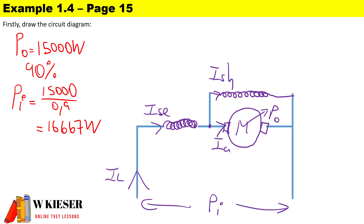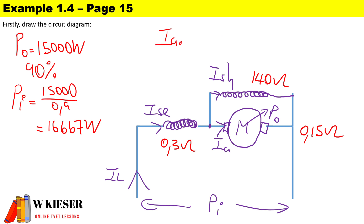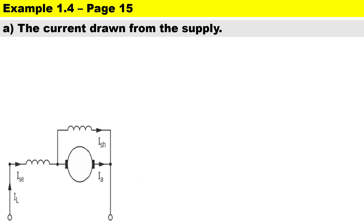The given values are: series field resistance 0.3 ohms, shunt field resistance 140 ohms, armature resistance Ra = 0.15 ohms, and brush contact volt drop (Ia × R_brush) = 3 volts.